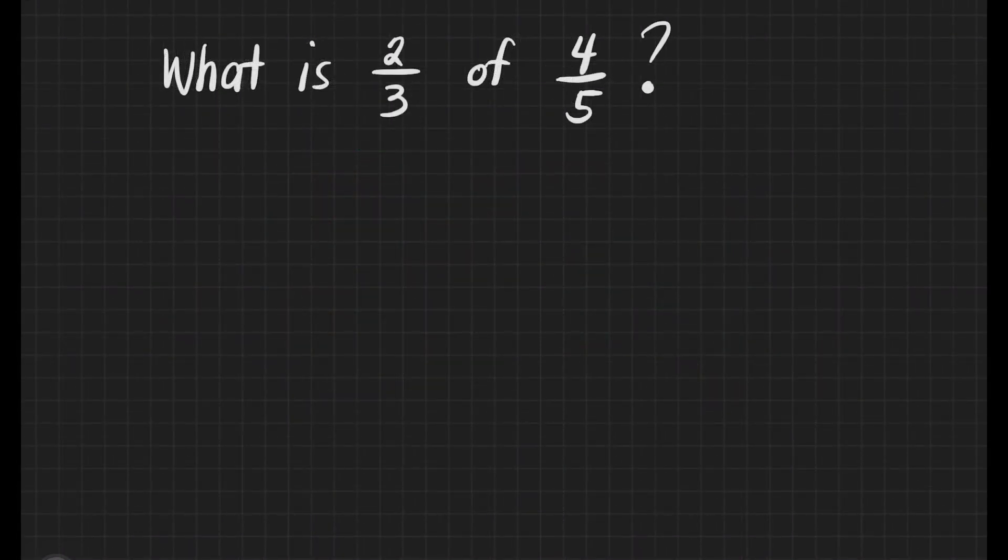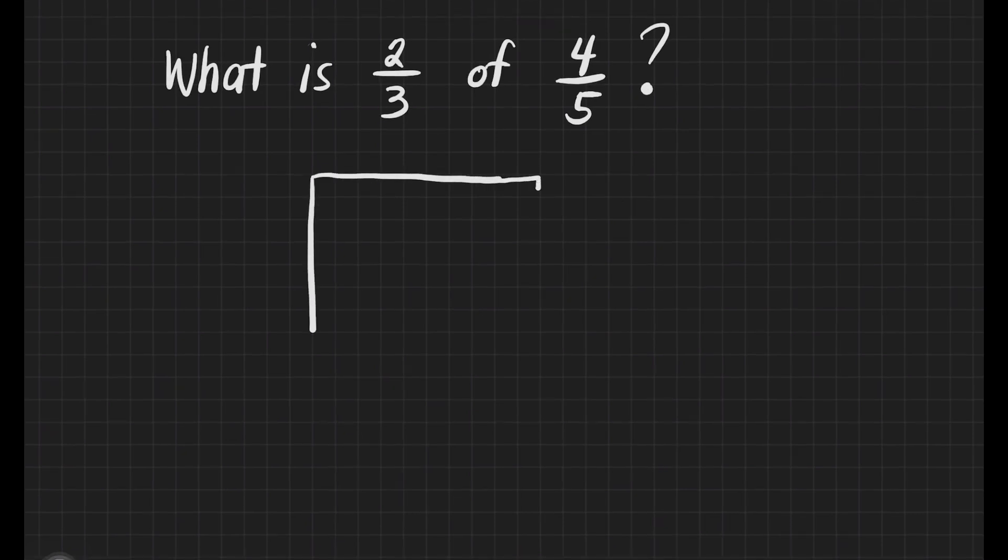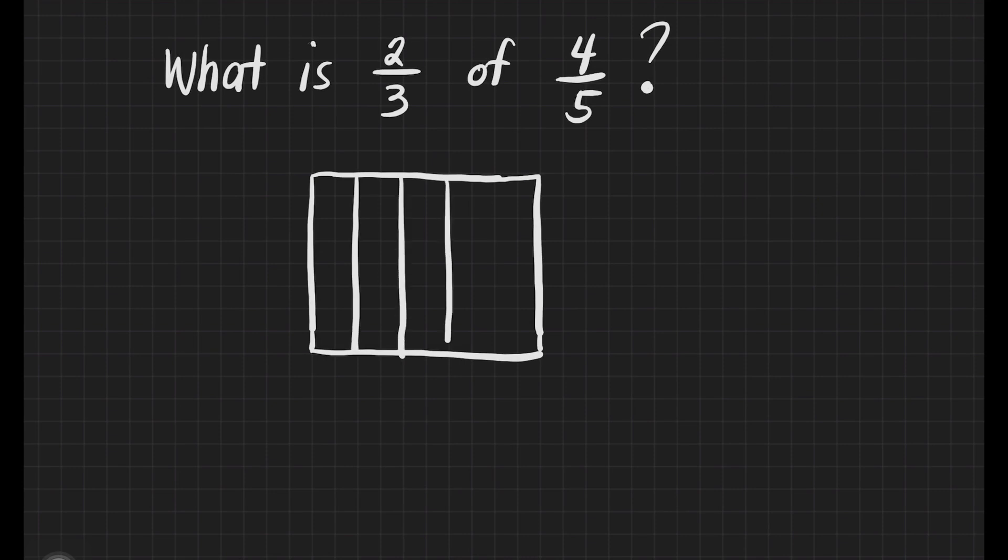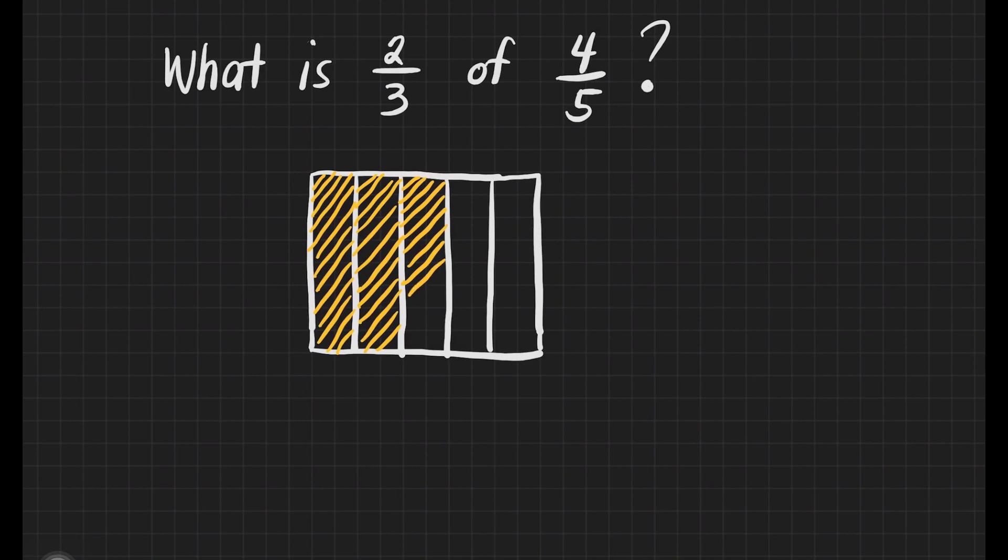We have another example here. What is 2/3 of 4/5? First, draw 4/5. Let's have that. Now, we'll divide and shade the parts. That's 1, 2, 3, and 4.